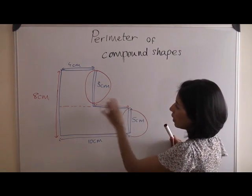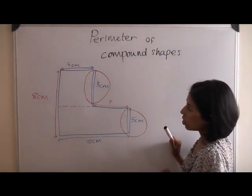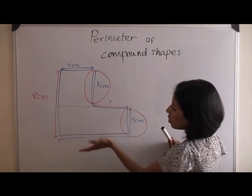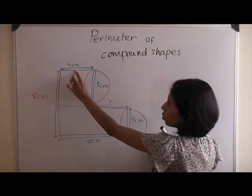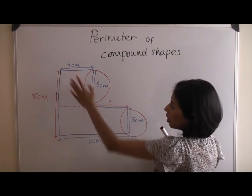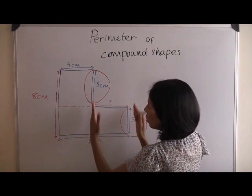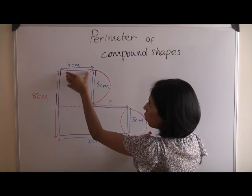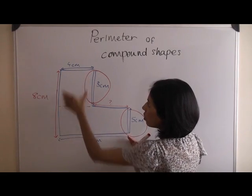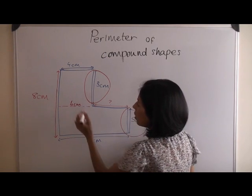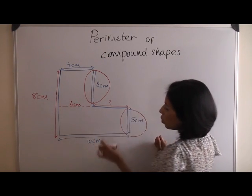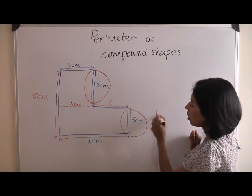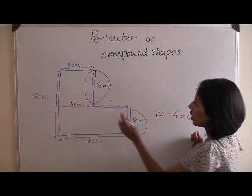Now, this missing length, you need to look at what you already know. The lines parallel to it measure ten centimeters and four centimeters. Now, you've already got some of the length, which needs to be taken away from the larger number. If that line was brought down, you know that that equals four centimeters, but the total line would equal ten. So you need to do a subtraction here. You need to do ten, take away four, which gives you six.